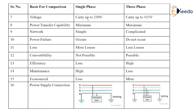The voltage carrying capacity is 240 volts for single phase and 415 volts for three phase. Power transfer capability is minimum in single phase and maximum in three phase. The network caused by the wiring system is simple in single phase as only two wires are used — one for phase, one for neutral. In three phase supply the network is complicated because it uses four wires: three for phase and one for neutral.